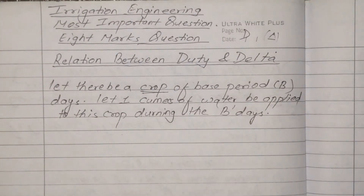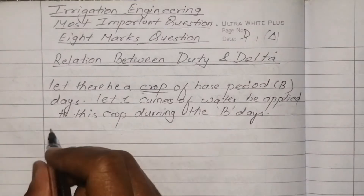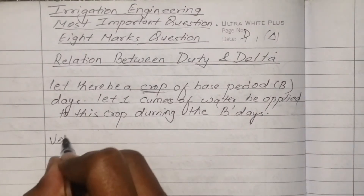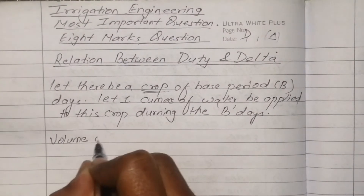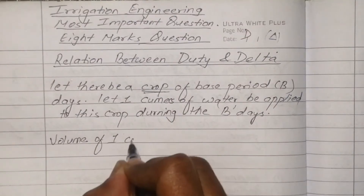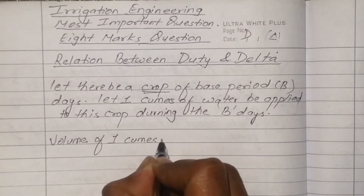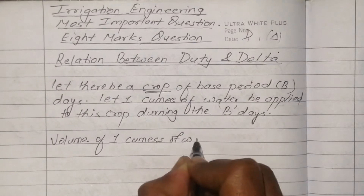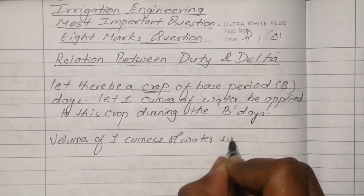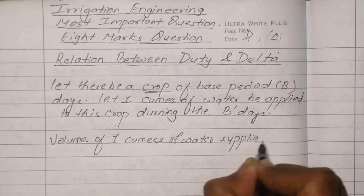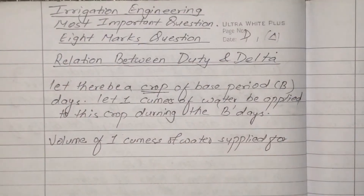The volume of 1 cumec of water supplied for B days can be calculated. The total volume of water supplied is the flow rate multiplied by the total time in seconds.